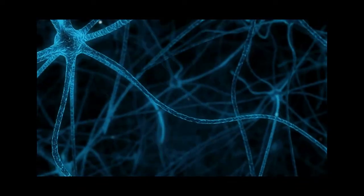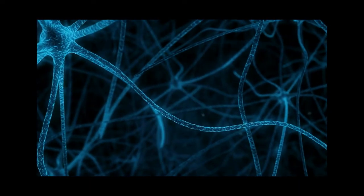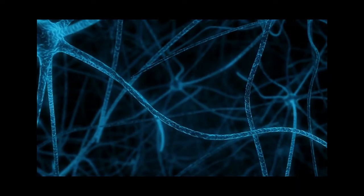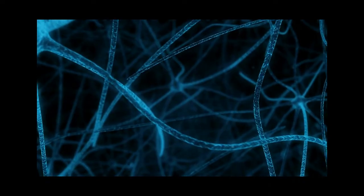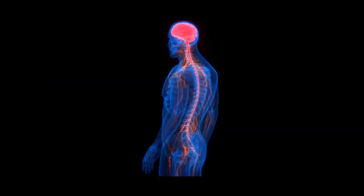In multicellular organisms, cells aren't just copies of each other. Instead, they differentiate into different types and form tissues, organs, and entire systems.